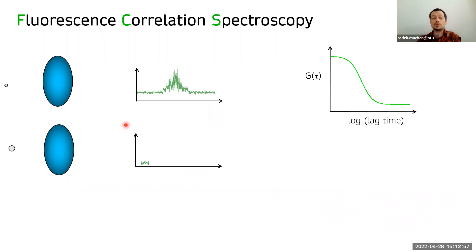So if we look at the larger particle, which is slower than the burst will be longer and the correlation function is broader.